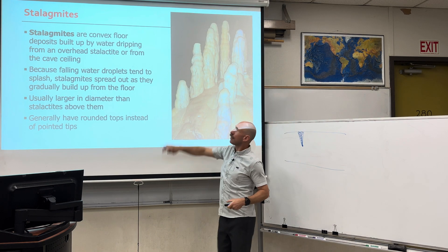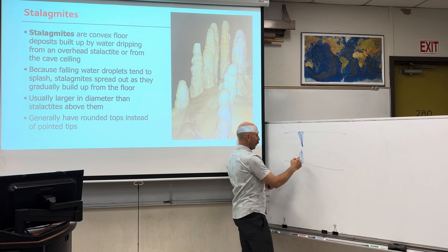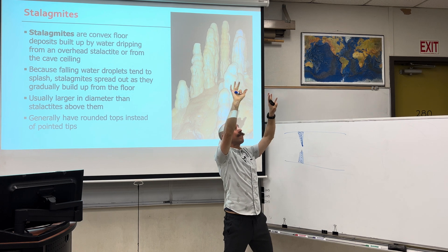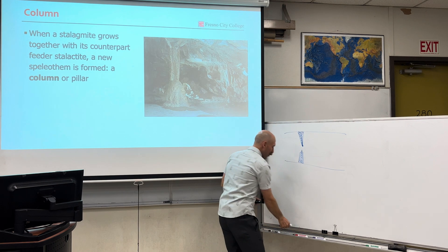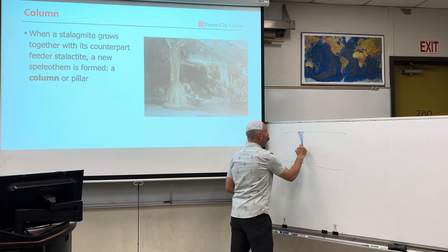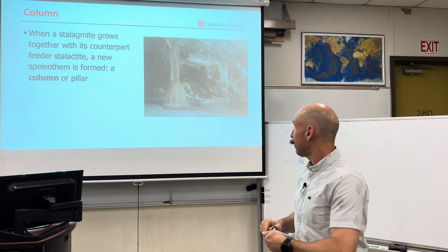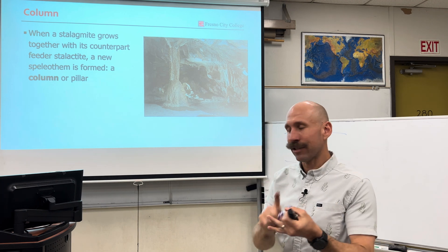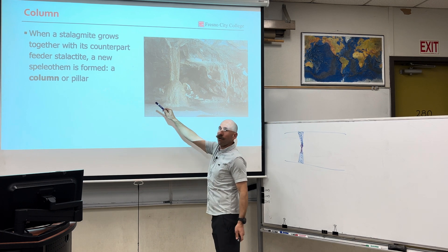Next, the common feature is stalagmites — when water drops down to the floor and they slowly build up over time. I like to think of it like stalagmites have to use all their might to grow up against the force of gravity, and stalactites have to hold on tight to the ceiling so they don't fall off. And when you get the two together, they might actually grow in and form one big feature known as a column. Caves will have lots of stalactites, lots of stalagmites, and areas where they grow together to form columns.